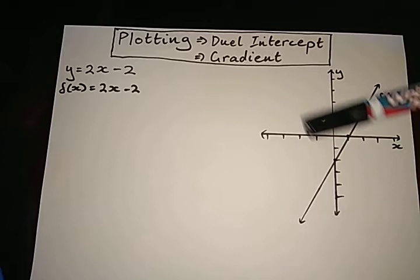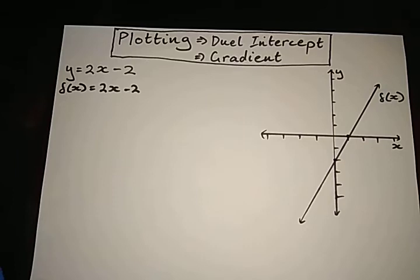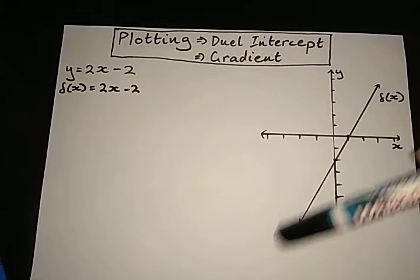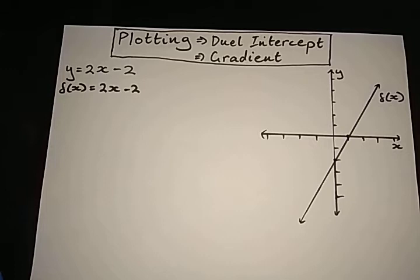Now, I've gone ahead and I've already plotted it on our Cartesian plane. And I'm going to be using this as our example when using the dual intercept or gradient method. Please note that you only need two random points on the graph to actually plot it. Once you plot those two random points, you can take your ruler and you can run a line straight through. And that would be completing the plotting of the straight line graph.